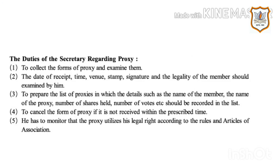The duties of the secretary regarding proxy: First, to collect the forms of proxy and examine them. Second, the date of receipt, time, venue, stamp, signature, and legality of the member should be examined. Third, to prepare a list of proxies recording details such as the name of the member, the name of the proxy, number of shares held, and number of votes. Fourth, to cancel the form of proxy if it is not received within the prescribed time. Fifth, to monitor that the proxy utilizes his legal right according to the rules and articles of association.